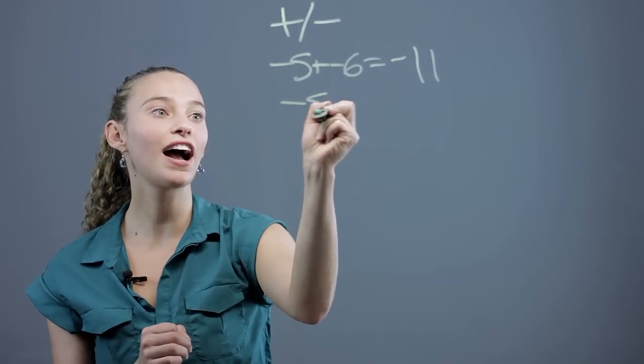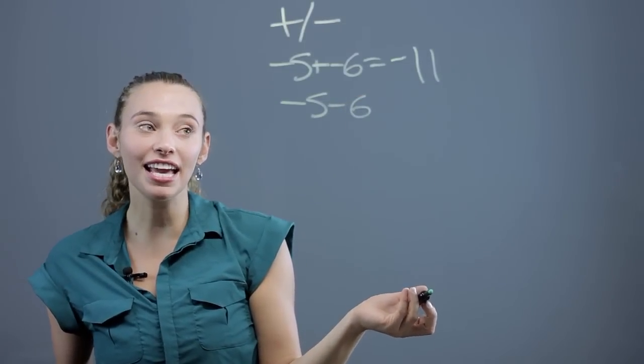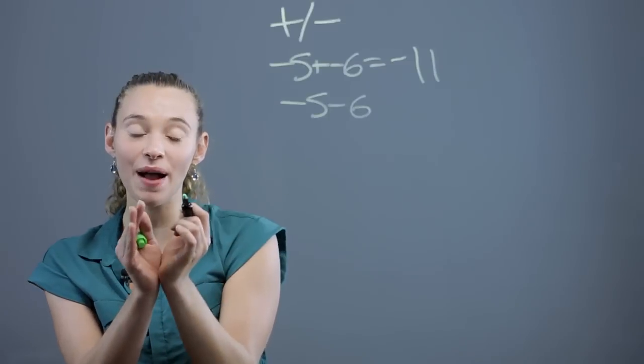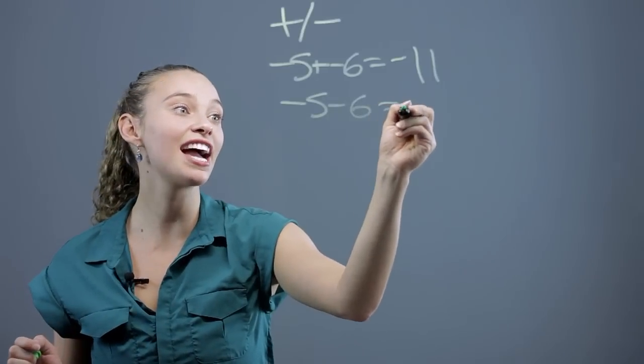But if you look at negative 5 minus 6, that's actually the same thing. You're starting with negative 5 and taking 6 away, getting further from 0, deeper into the negatives, to get negative 11.